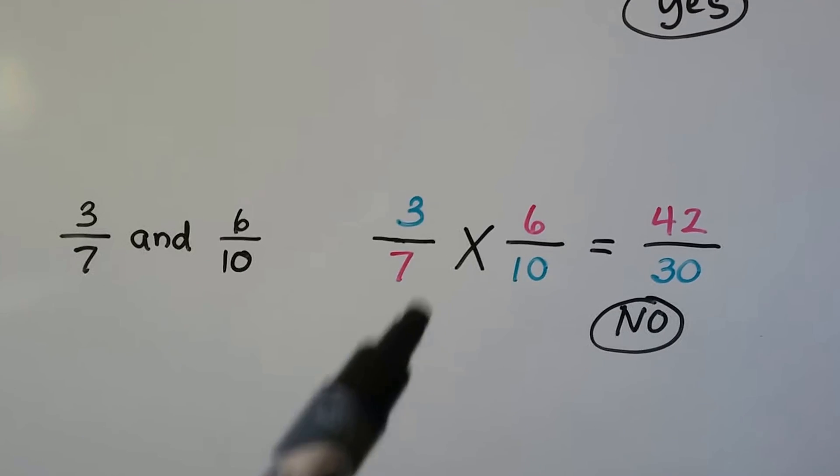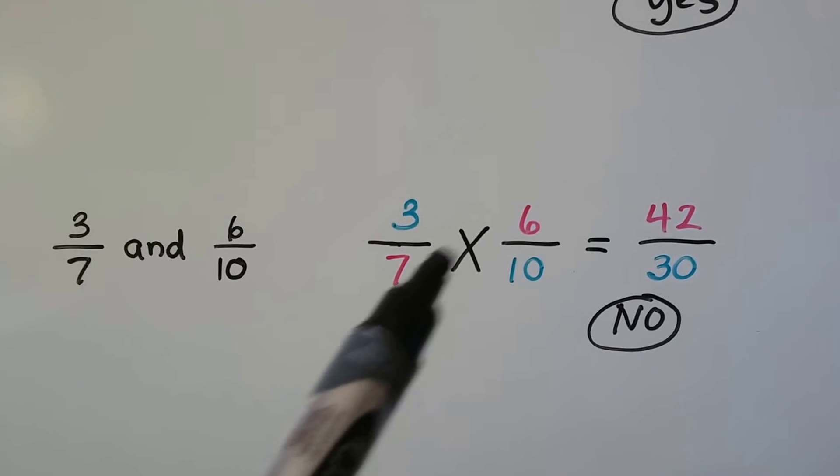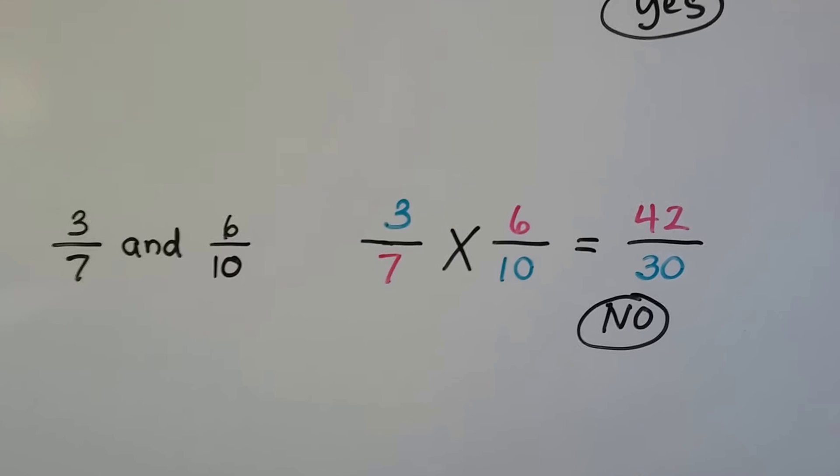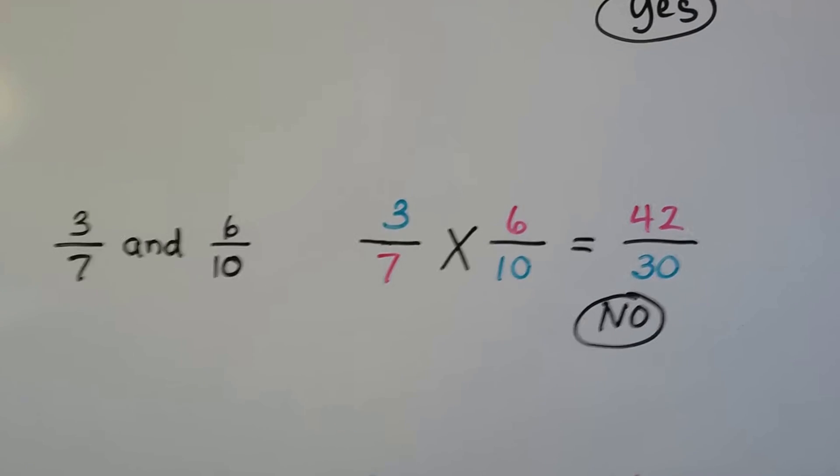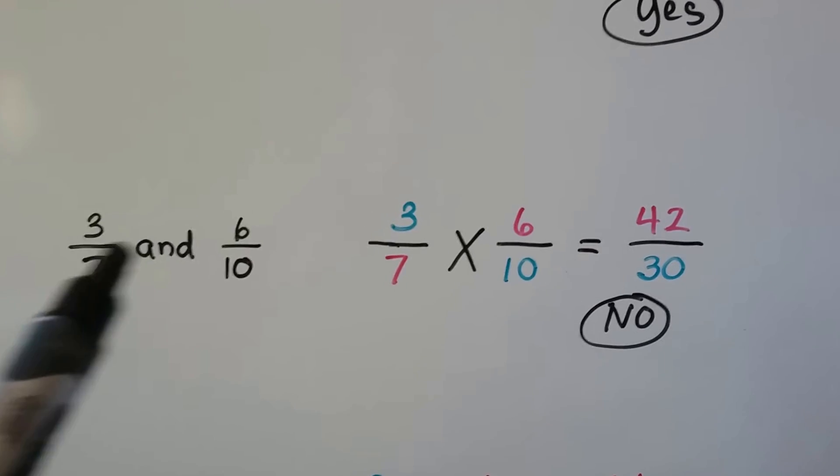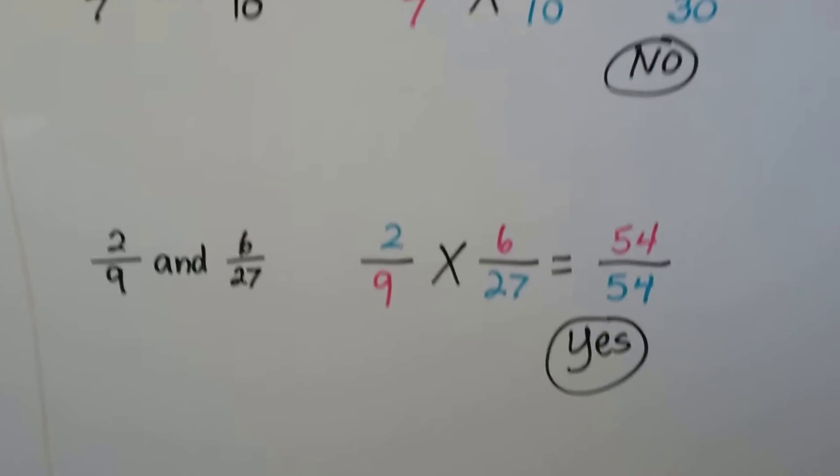Three-sevenths and six-tenths. Three times ten is thirty. Seven times six is forty-two. Nope, it's not the same product. So these are not equivalent fractions.